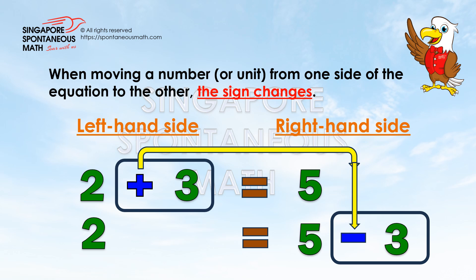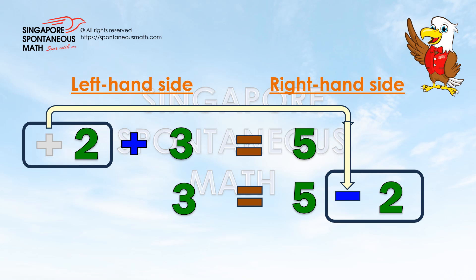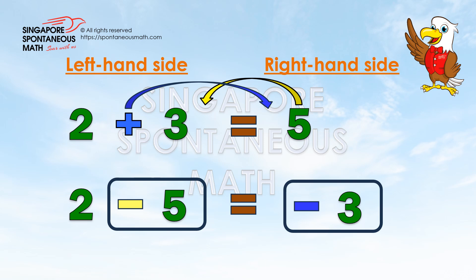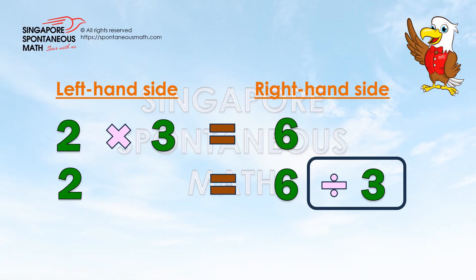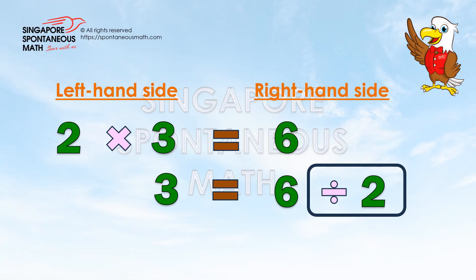In this example: 2 plus 3 equals 5, so 2 equals 5 minus 3. When we move the positive 3 from the left-hand side of the equation to the right-hand side, the sign changes from positive to negative. Similarly: 3 equals 5 minus 2; 2 minus 5 equals negative 3; 2 equals 6 divide by 3; and 3 equals 6 divide by 2.